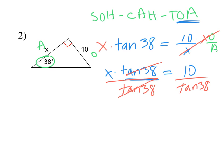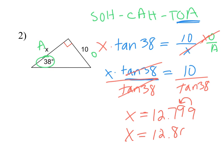tan(38°) cancels on the left, and x = 10 ÷ tan(38°). Go to your calculator — already in degree mode — and type 10 divided by tangent 38. You should get approximately 12.799. Rounding to the nearest hundredth: the 9 rounds the previous digit up, giving 12.80. I'm including that trailing zero to show I'm rounding to the hundredths place.